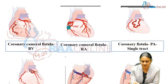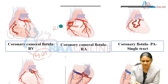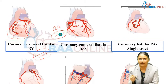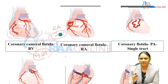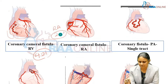Here the normal RCA is also slightly dilated, with the fistula's tract ending in the right atrium, which constitutes 20 percent of cases. It can be either RCA or LCA draining into the RA.